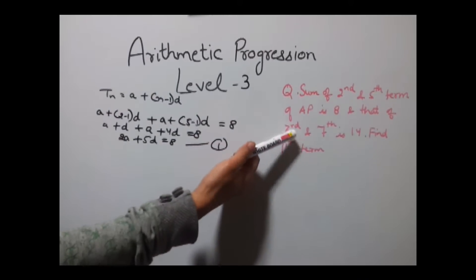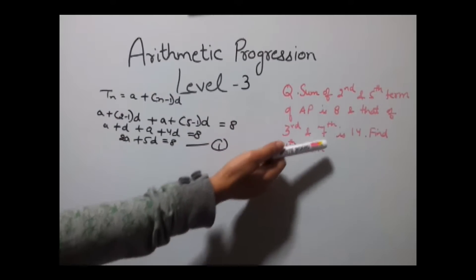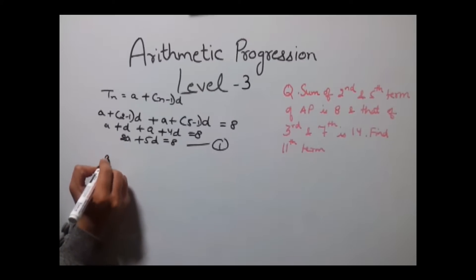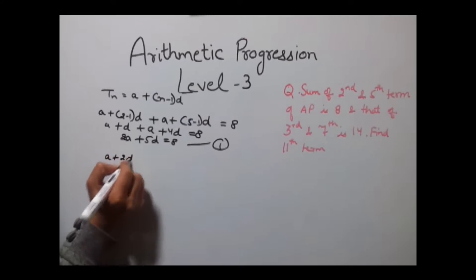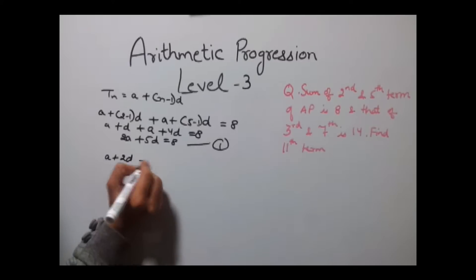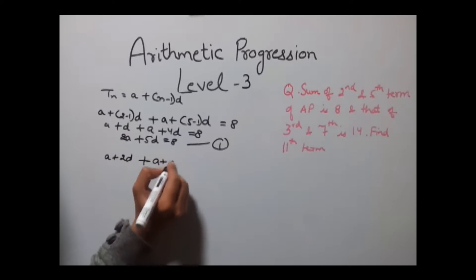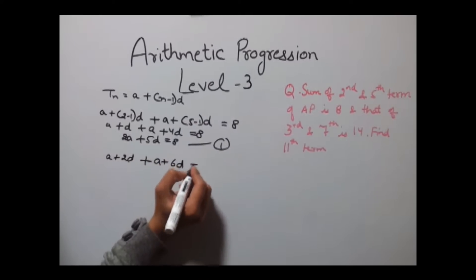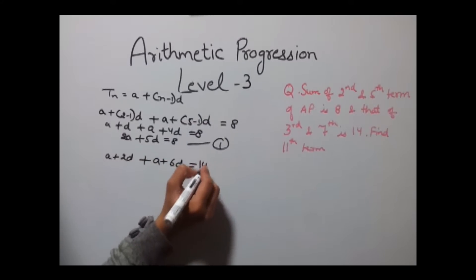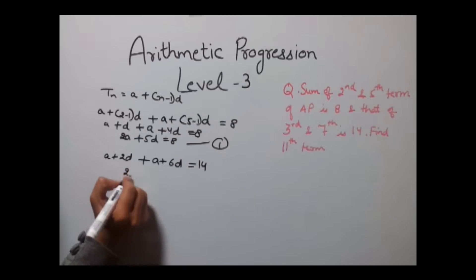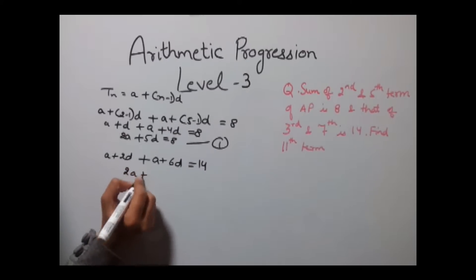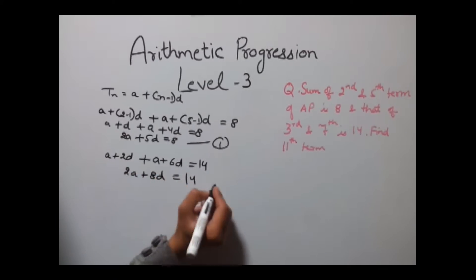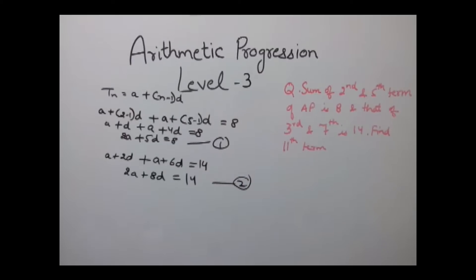Similarly, the 3rd and 7th terms sum to 14. So we get (a + 2d) + (a + 6d) = 14, which gives us 2a + 8d = 14. This is our second equation.